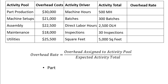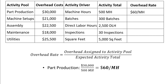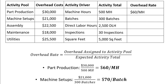For part production, we have $30,000 in overhead costs divided by 500 total machine hours, which gives us $60 of overhead costs per machine hour. For machine setups, we have $21,000 split amongst 300 batches, giving us $70 of overhead costs per batch. Using the same process for the three remaining activities, we get $9 of overhead per direct labor hour, $600 of overhead per inspection, and $5.10 of overhead per square foot occupied. I encourage you to pause the video and work out those last three calculations on your own to make sure your answers match.